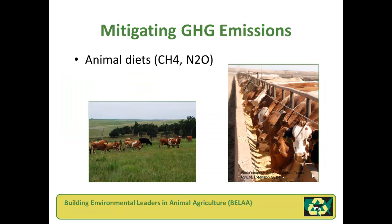Ruminant animals such as cattle, sheep, and goats emit methane as a byproduct of feed digestion. As a general rule, highly digestible feeds such as grains result in fewer direct methane emissions than less digestible feeds. Research has also shown that carefully matching animal protein needs with feed ingredients and not overfeeding protein can reduce nitrogen levels in manure, which in turn reduces nitrous oxide emissions from manure storage or from land application of manure.